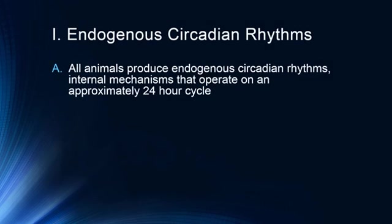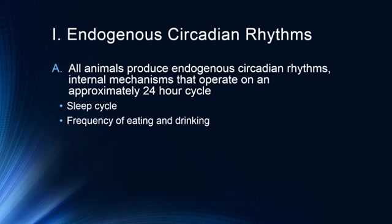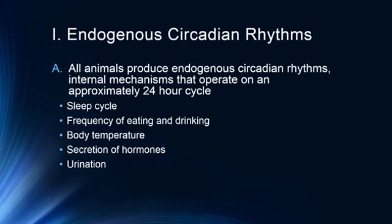All animals produce an endogenous circadian rhythm, and endogenous simply means that it is controlled internally. We have internal mechanisms that operate on an approximate 24-hour cycle. These include our sleep cycle, how often we eat and drink, changes in body temperature, secretion of hormones, urination, and sensitivity to drugs — all of which alter as part of this 24-hour cycle.